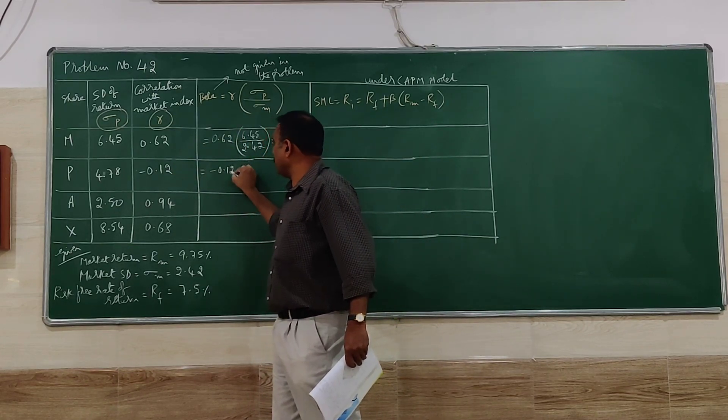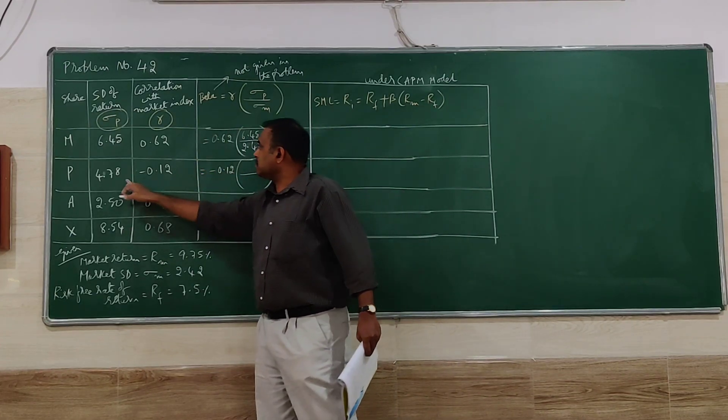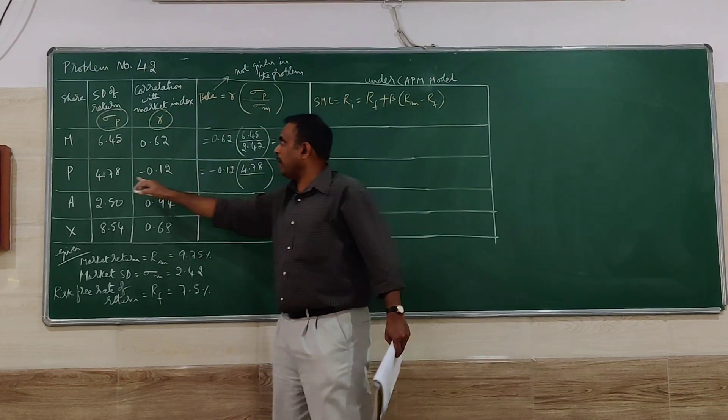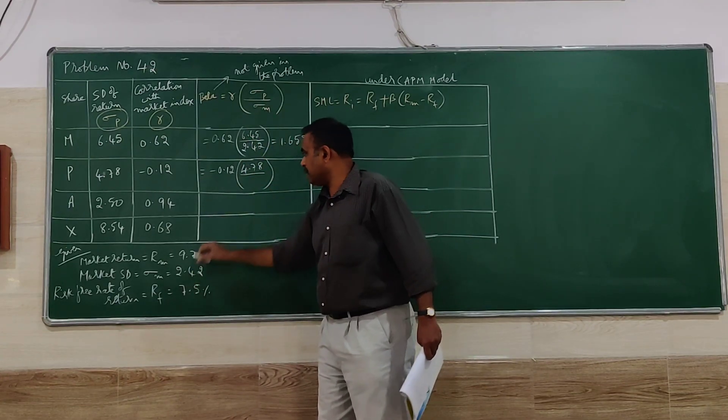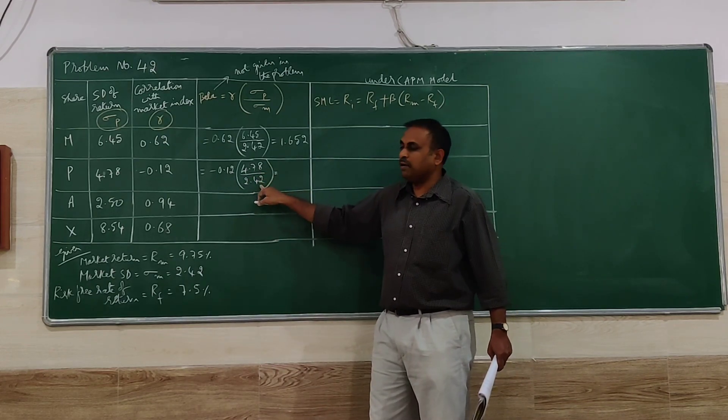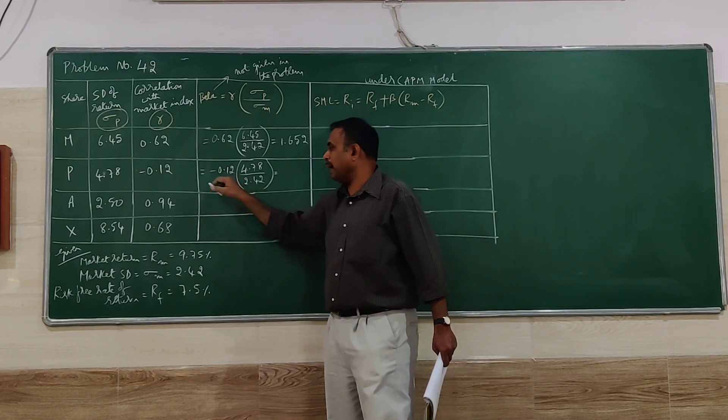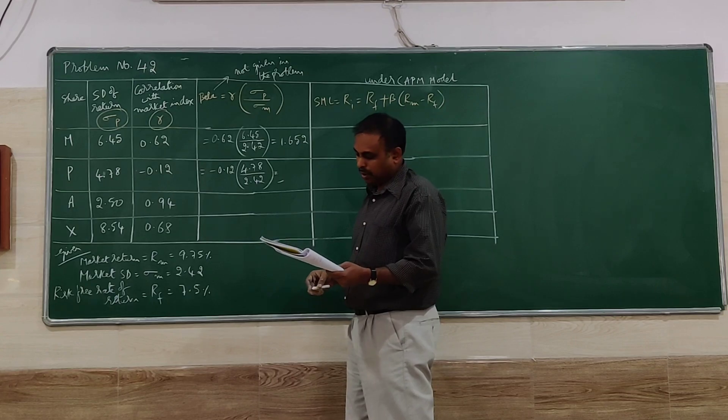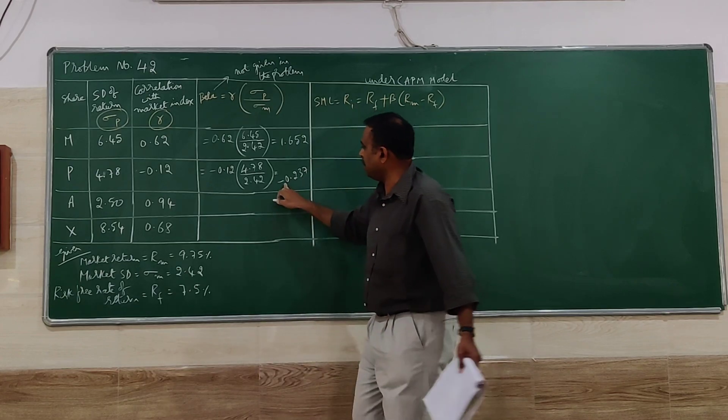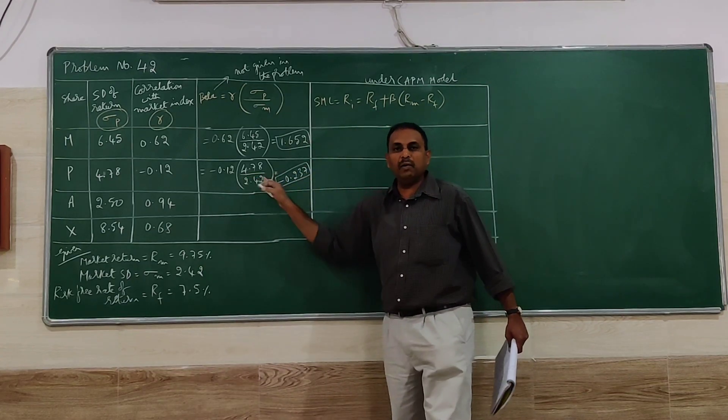Here it is minus, we have to be more careful with minus values. Multiply by the standard deviation of particular stock 4.78, divided by market SD 2.42. So 4.78 divided by 2.42 multiply by 0.12, but it is a minus value. So we get the result also in minus: minus 0.237. Remember the value will be in minus.